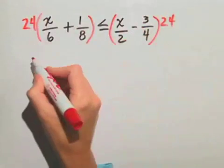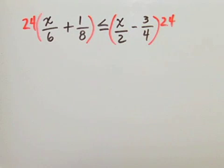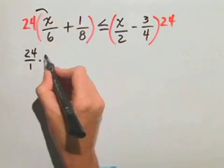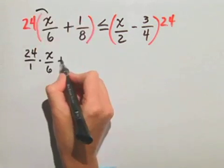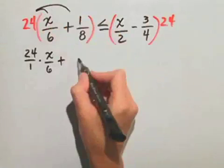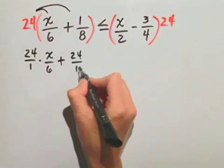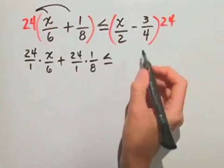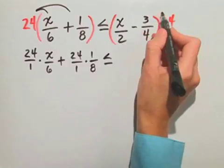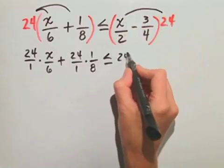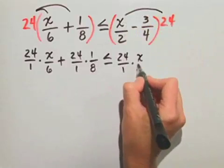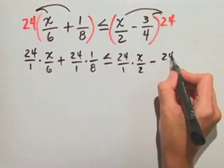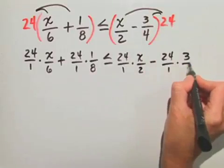And when we do, we have 24 over 1 times x over 6 plus 24 over 1 times 1 eighth is less than or equal to 24 over 1 times x over 2 minus 24 over 1 times 3 fourths.